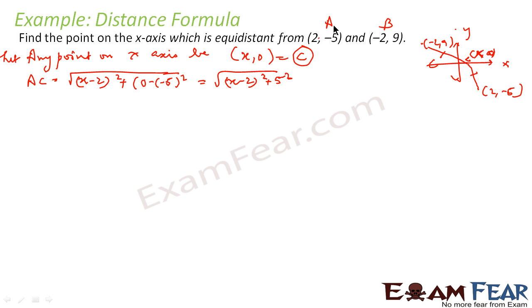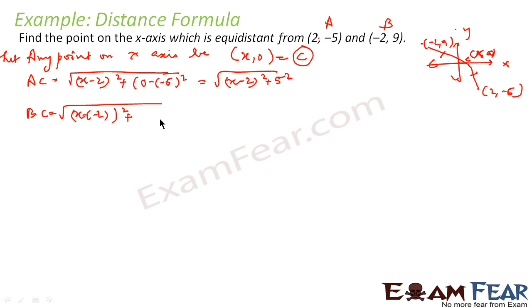Similarly, let us find distance BC: BC = √((x − (−2))² + (0 − (−9))²) = √((x + 2)² + (−9)²) = √((x + 2)² + 81).